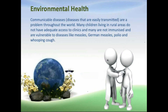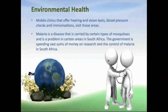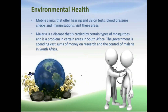Communicable diseases — that are diseases that are easily transmitted — are a problem throughout the world. Many children living in rural areas do not have adequate access to clinics and many are not immunized, making them vulnerable to diseases like measles, German measles, polio and whooping cough. Mobile clinics that offer hearing and vision tests, blood pressure checks and immunizations visit these areas.